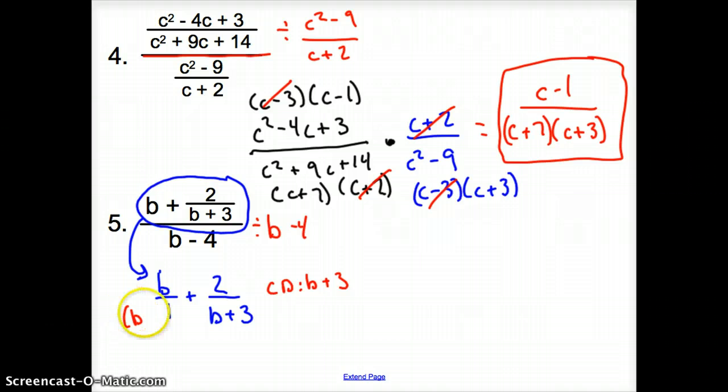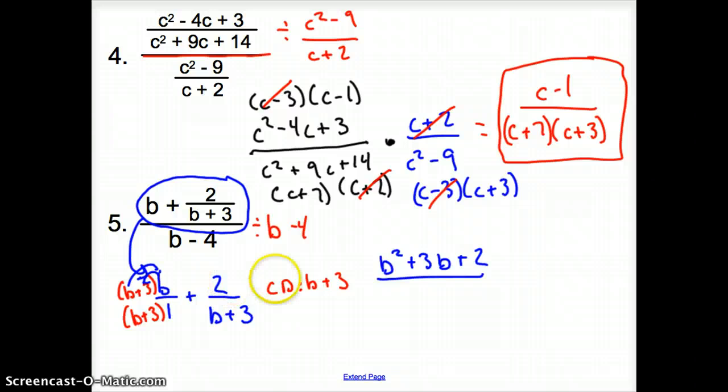So I have to take the bottom by b plus 3. Once you do the bottom, you have to do to the top. So now this guy is going to turn into, I'm going to distribute that b here and there. So it is b squared plus 3b plus 2. And what's that all go over? Because I distribute it here, here, plus 2. It all goes over b plus 3.